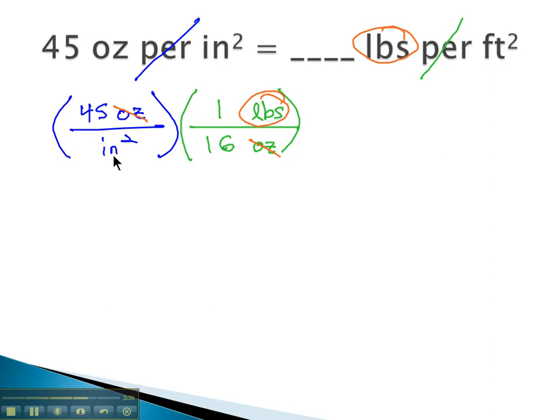But we still need to convert the denominator. To get rid of the square inches, they need to go in the numerator, and we want them to become square feet in the denominator. Be careful as you look up this conversion factor. A common error, students will put 12 inches in one foot, but we're not talking about inches and feet. We're talking about square inches and square feet. We're talking about area. And if you look up that area conversion factor, you'll see one square foot is 144 square inches.